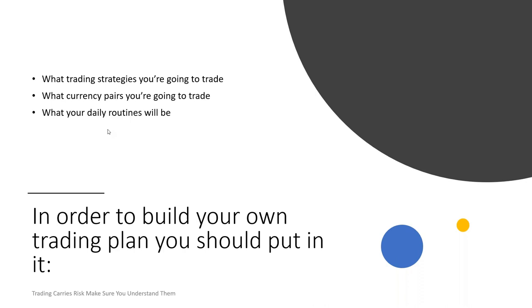Your trading plan should include what trading strategies you're going to trade — and we all need more than one. You need strategies for different asset classes, for political news periods, risk-off trading, earnings season. Different strategies apply at different points. Then, decide what assets you're going to trade. One of the biggest failure rates in online trading is the fact that online trading offers too many choices.